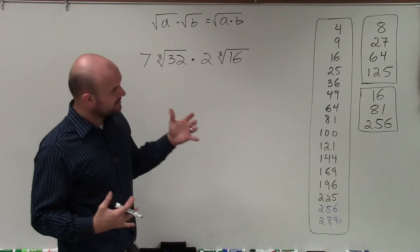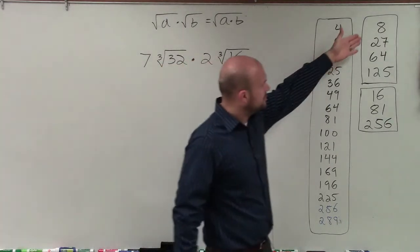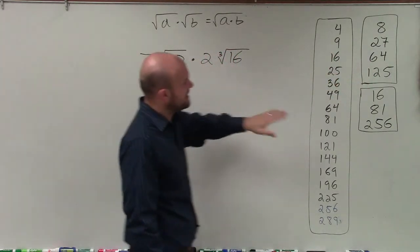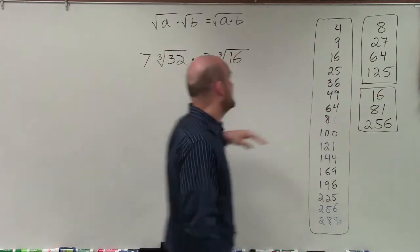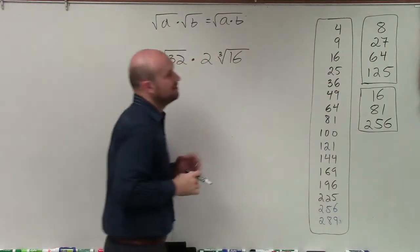But I think the easiest way, once you kind of get an understanding of prime factorization, is just to look at your cubed numbers here and say, can I rewrite either of my radicands as a product of one of these cubed numbers? And you see that both 16 and 32, I can rewrite as the product with 8.